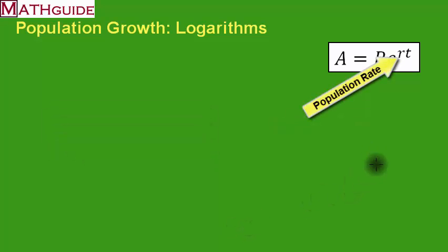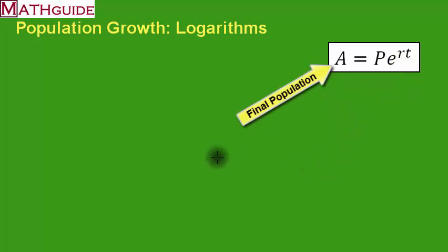R is the rate. We call that the population growth rate, and that can change depending on the animals or insects or peoples you're talking about. T is our time, how much time is allowed to transpire between the initial population and the final population. And that's what A stands for. A stands for the population that we receive after some amount of time transpires.